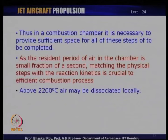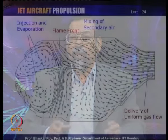Finally, one must keep an eye on temperature. The temperature in the primary zone is very high — of the order of 2500°C. However, air above about 2200°C has a tendency to dissociate locally. So the high primary zone temperature should not be allowed to persist into the rest of the combustion chamber where air may dissociate. Let us take a look at how combustion is actually controlled inside the combustion chamber.